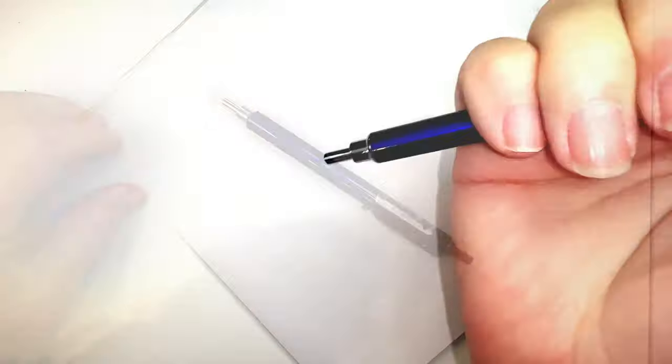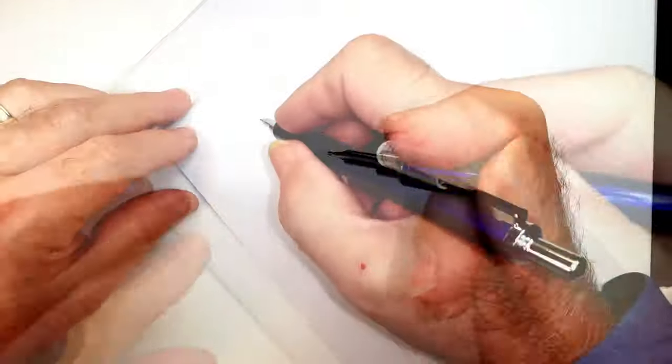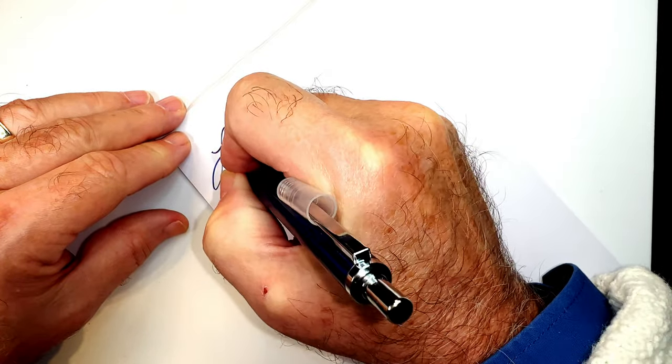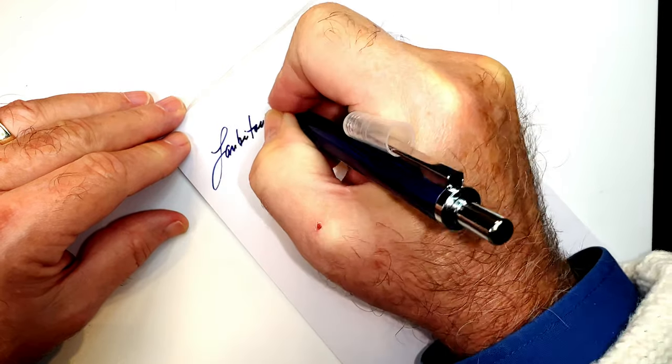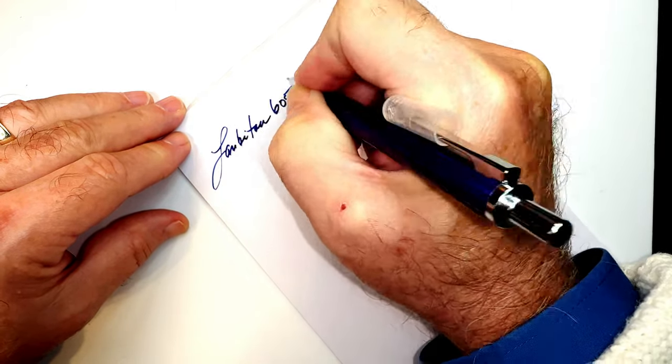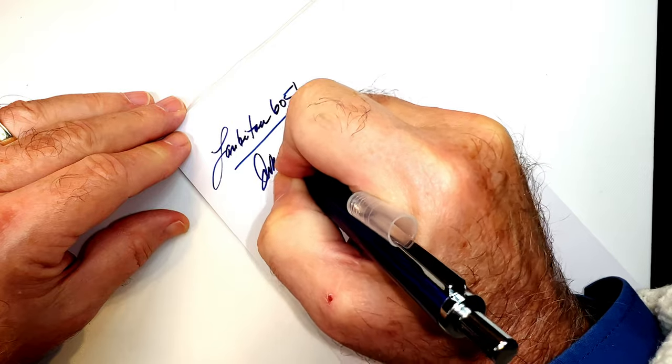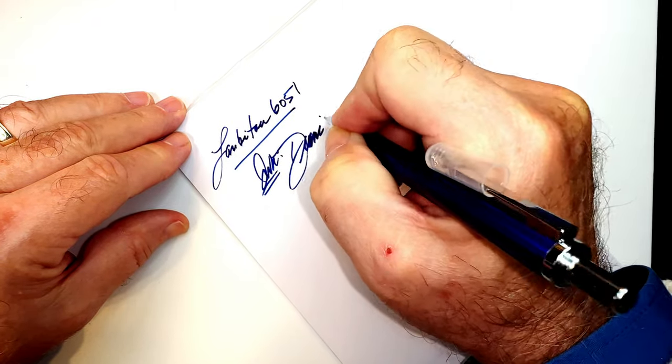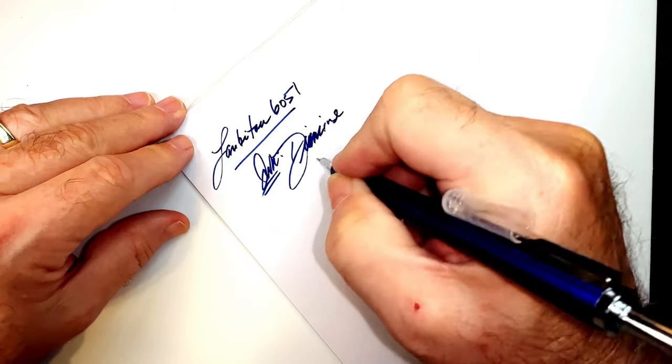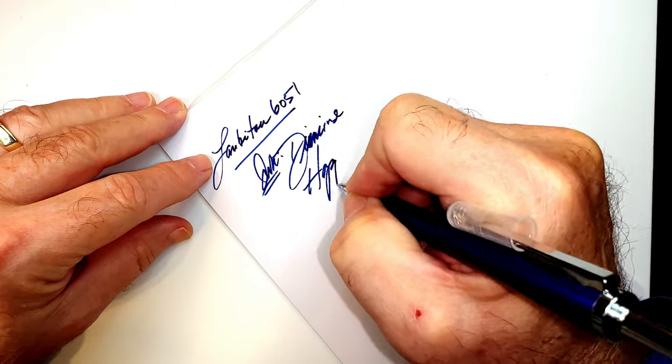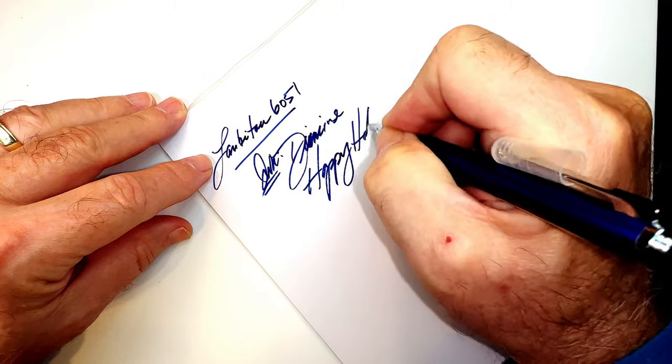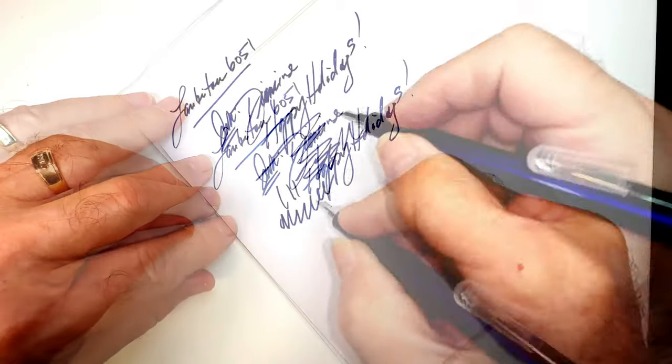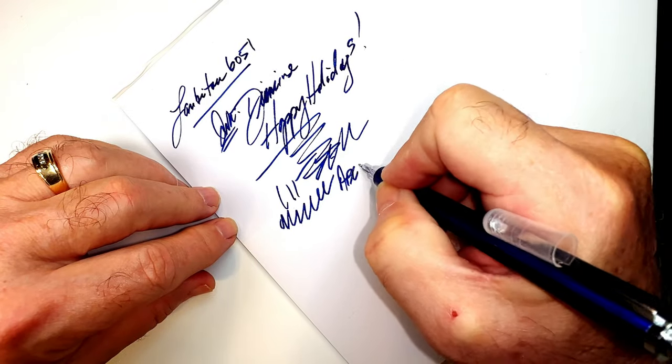There we go. Retract our pen and give it a try. This is the Lan B2 6051 and the ink is Diamine Happy Holidays. I might enjoy writing with this pen - look at that! And all for about four bucks.